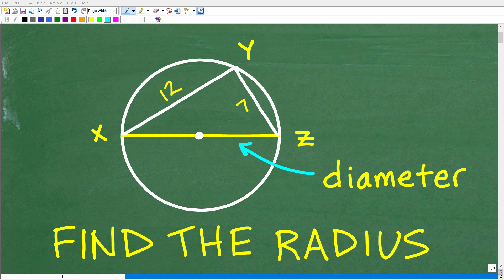Let's see if you have the geometry knowledge to solve this problem. The question is, we want to find the radius of this circle, and we have this given information. We're told that this chord, or this line segment X, Z, is the diameter of the circle.